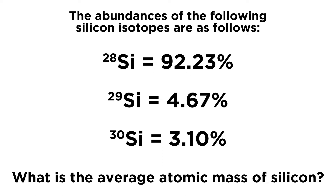If this is confusing, go check out my tutorial on nuclide symbols. We want to understand atomic mass, atomic number, mass number, and what isotopes are. If you're unclear, check out that tutorial first. If everything makes sense, give this a shot.